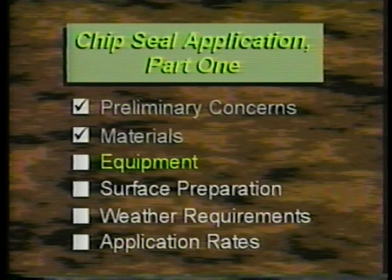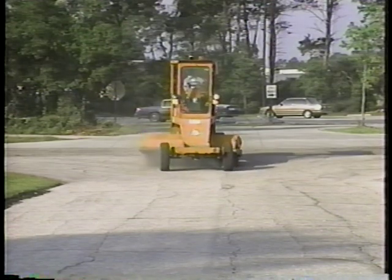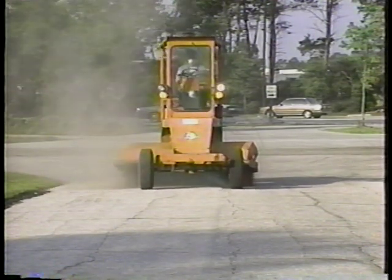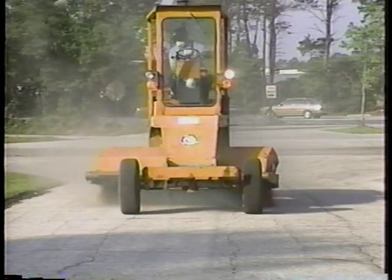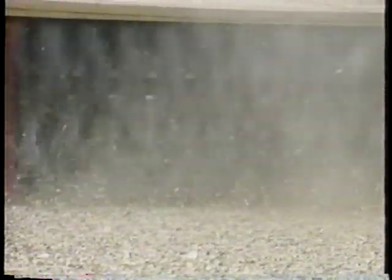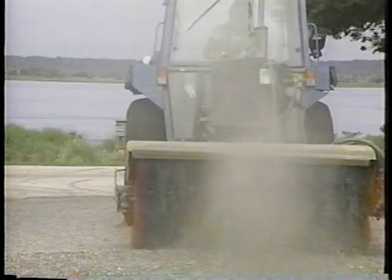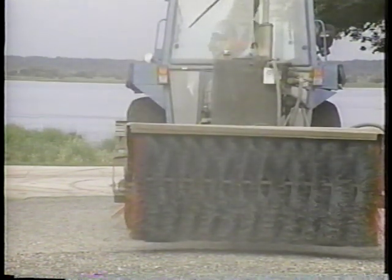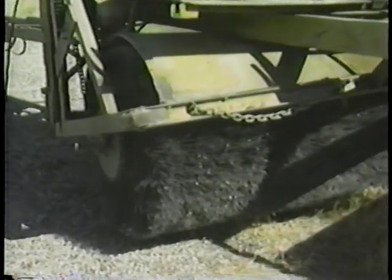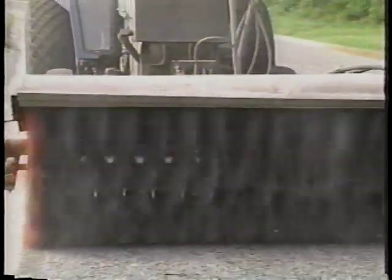Now let's go over the equipment. On chip seal projects, the first and last piece of equipment on the job is the power broom. Before chip sealing, the surface has to be cleaned to receive the oil application, so dust, sand, stones, and debris need to be swept off as thoroughly as possible. At the end of the job, the broom must sweep off any loose chips without dislodging the chips that are set in place. Damage to the fresh chip seal can result from broom bristles that are in poor condition or from too much downward pressure. See that the bristles are long — stubby ones would more likely dislodge chips from the surface. Be sure that the broom can float and self-adjust vertically. If it's rigid, there's sure to be too much downward pressure.